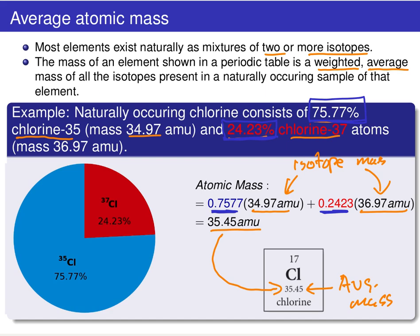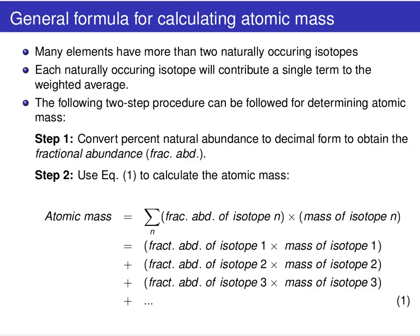That was an example for chlorine. Let's put together a formula — a protocol for calculating the atomic mass for any element. Elements that have two or more naturally occurring isotopes are going to have an average atomic mass wherein each naturally occurring isotope will contribute a single term to that weighted average. We need to follow a two-step procedure to determine that atomic mass.